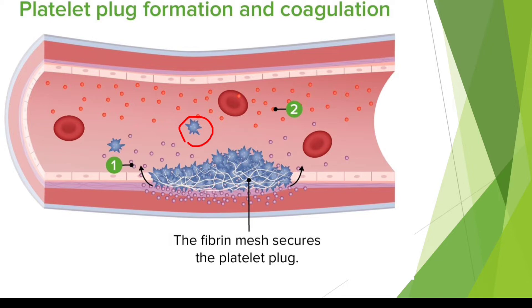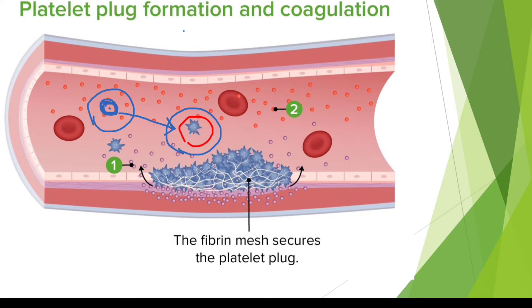Initially, platelets are present within blood as small round structures containing various granules, which are important for platelet activation and normal functioning. Whenever there is a cut or injury in a blood vessel, these platelets get activated. They transform into a spiky structure with small spikes all over the surface. This activated spiky structure enhances the process of adhesion and aggregation.